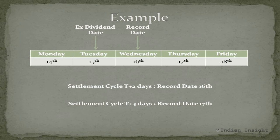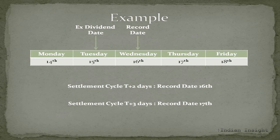Now let's look at an example to understand all these terminologies a bit better. In this table, the ex-dividend date is the 15th, so anyone buying the stock on the 15th would not be eligible for receiving dividends. In order to receive the dividend, one needs to be the owner of the stock on the 14th. If you buy the stock on the 15th, you won't receive the dividend — instead, the person who sold you the stock would receive it.